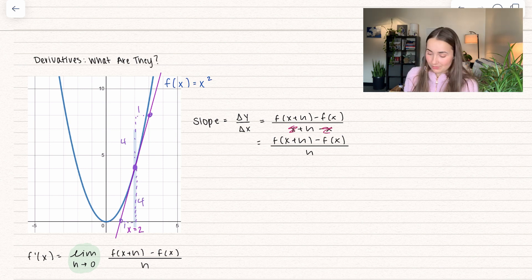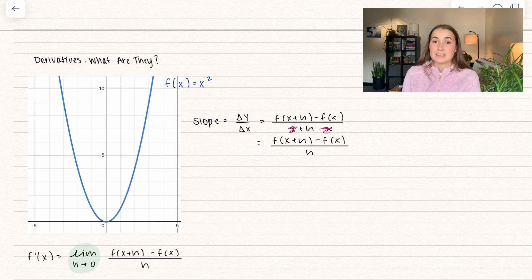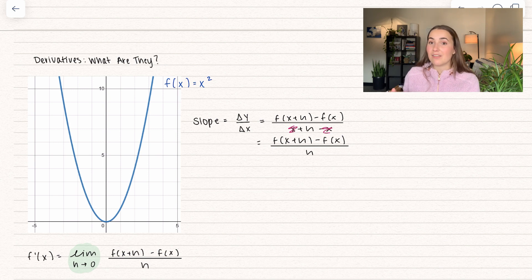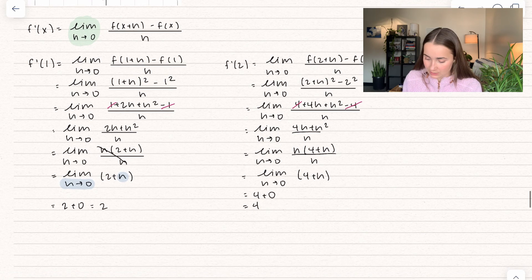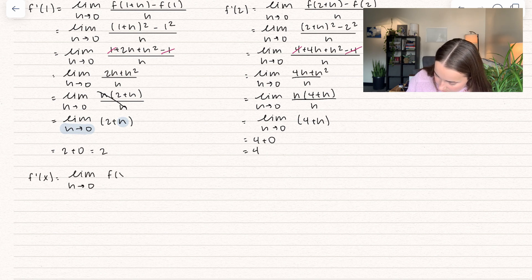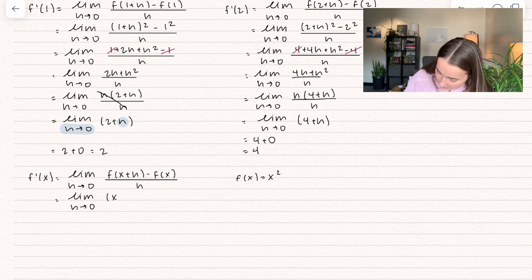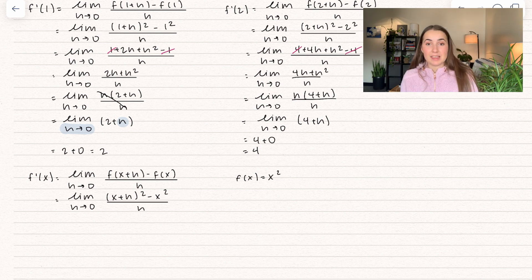So this is how the derivative works — it represents the rate of change of that function. But I don't want to find the derivative at every single point individually. To find the actual derivative function, instead of plugging in a specific value, I keep it at x. Here are two examples where we plugged in actual values — now let's do it more generally. We know f of x equals x squared, so let's plug that in: we get the quantity x plus h, squared, minus x squared, all divided by h. Instead of a specific point, I'm finding the derivative for all points — I can plug in any value of x.